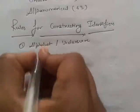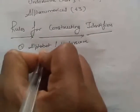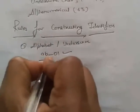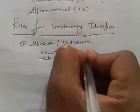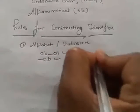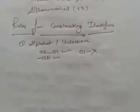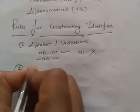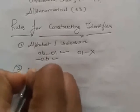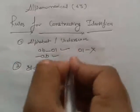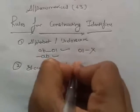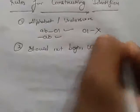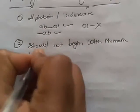It means, we can say that a, b, 0, 1, it is correct. Underscore a, b, it is correct. But we don't have to put numeric digit. This is wrong. So, the identifier should not begin with numeric digit.